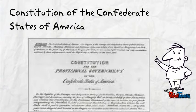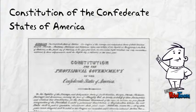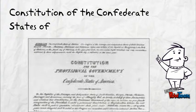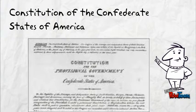The Constitution of the Confederate States of America. March, 1861. Preamble: We, the people of the Confederate States, each state acting in its sovereign and independent character, in order to form a permanent federal government, establish justice, ensure domestic tranquility, and secure the blessings of liberty to ourselves and our posterity, invoking the favor and the guidance of Almighty God, do ordain and establish this Constitution for the Confederate States of America.